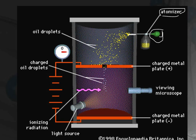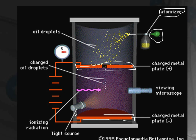Here, the force of gravitation acts on the oil droplets and they move downwards. There were two electrical charged plates — one charged metal plate on top and one charged metal plate on the bottom. As you could see in the circuit, this plate was charged with a positive charge and this one was charged with a negative charge.